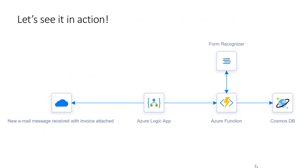Today, I would like to present a solution where I used Form Recognizer to extract data related to invoices. Let's briefly discuss the solution architecture. I have a Logic App connected with my Gmail account. Once a new message is received with an attached invoice, the Logic App is triggered. It gets the attachment, saves it to Azure Blob Storage, and calls an Azure Function. That Azure Function uploads the document to Form Recognizer, gets the result, and inserts the analysis data into Azure Cosmos DB.